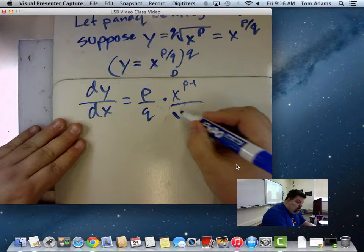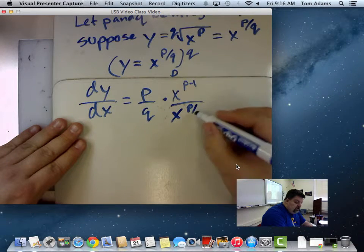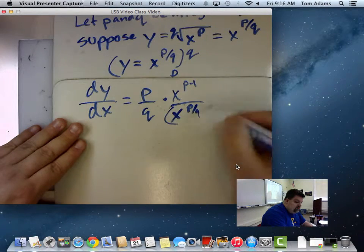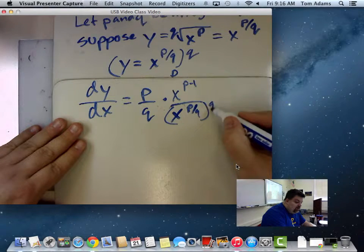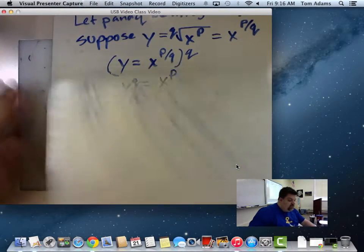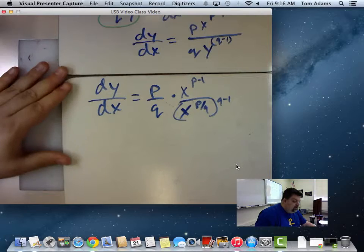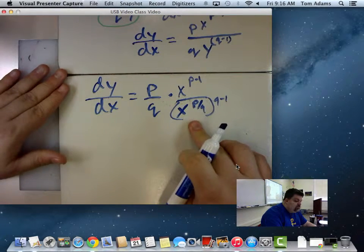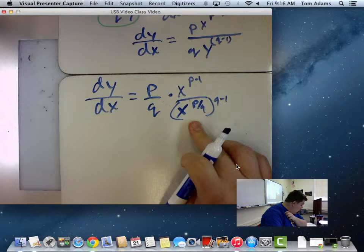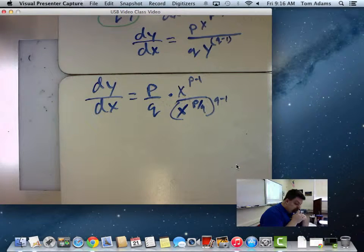So if I replace the Y with X raised to the PQ, that's going to be raised to the Q minus 1. Do you guys see where that comes from? I'm just replacing this Y with X to the P over Q. Wait. I don't even see where you're replacing it.